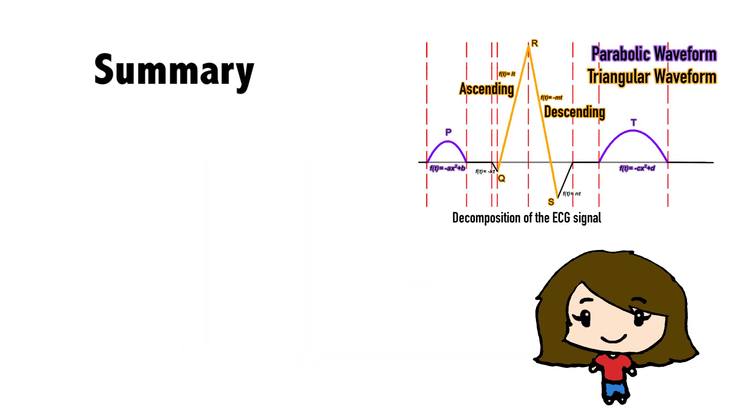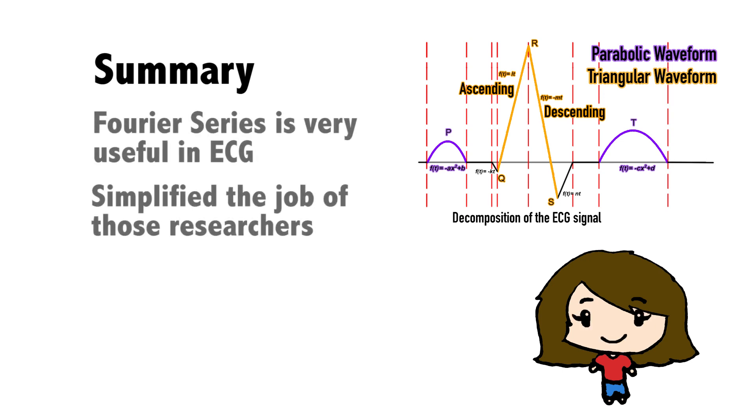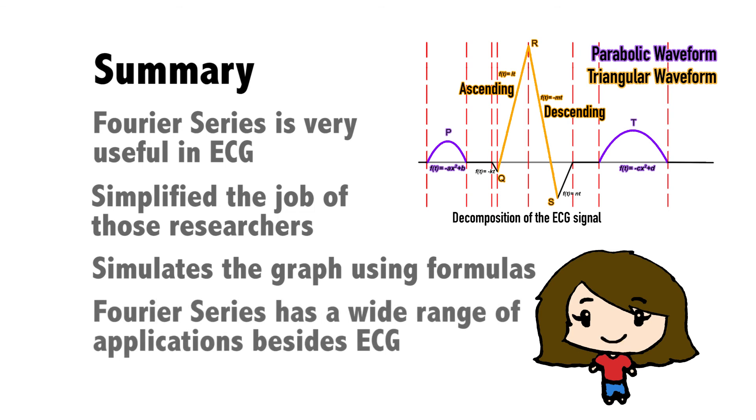In short, Fourier series is very useful in ECG. It simplified the job of those researchers working in hospitals. They can easily simulate the graph using the formulas. Fourier series has a wide range of applications beside ECG. It is very useful in other areas as well.